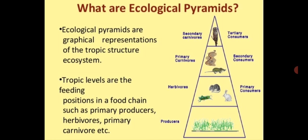The next topic we are going to talk about is ecological pyramids. Ecological pyramids are the graphical representations of the trophic structure of ecosystems. The trophic levels, as discussed earlier, are the feeding positions in a food chain — such as primary producers, herbivores, primary carnivores, tertiary and quaternary — all of those are trophic levels. So ecological pyramids are graphical representations of all these trophic levels in short.